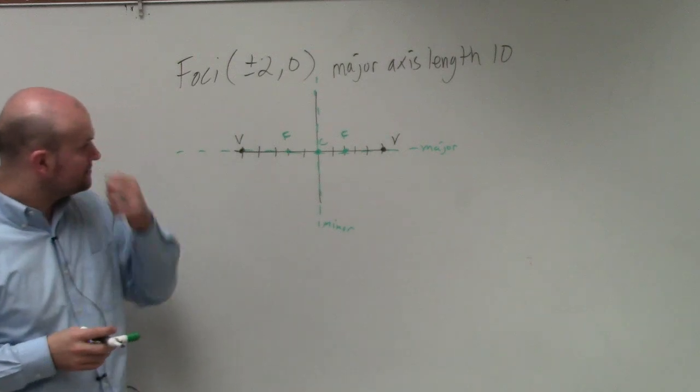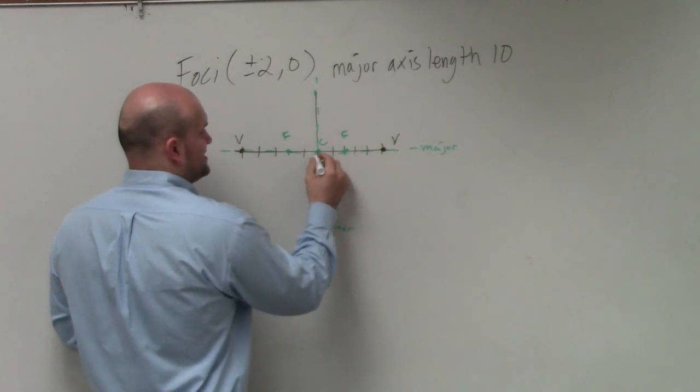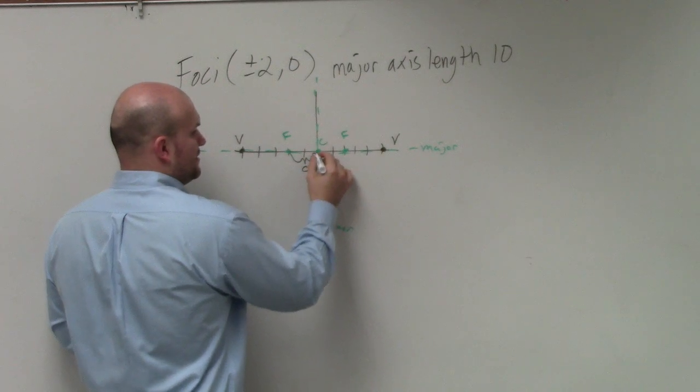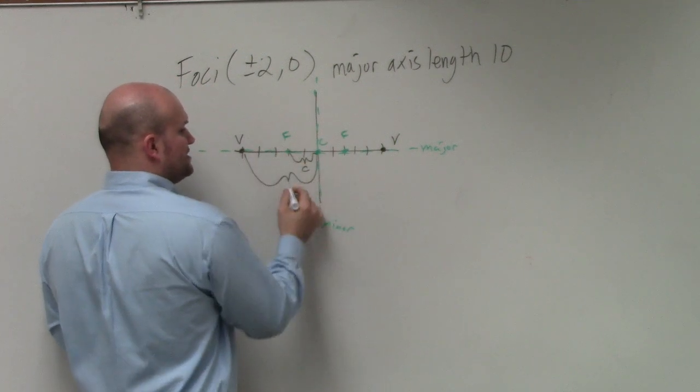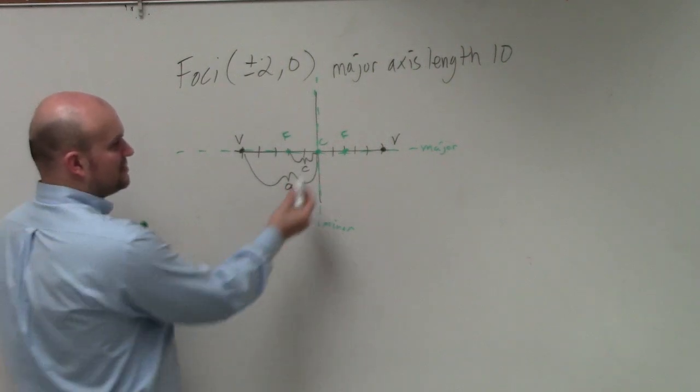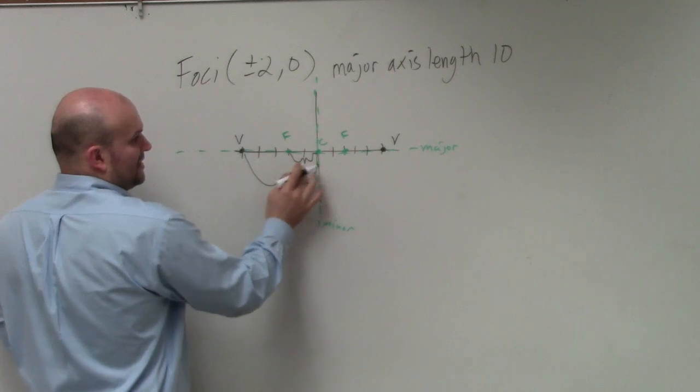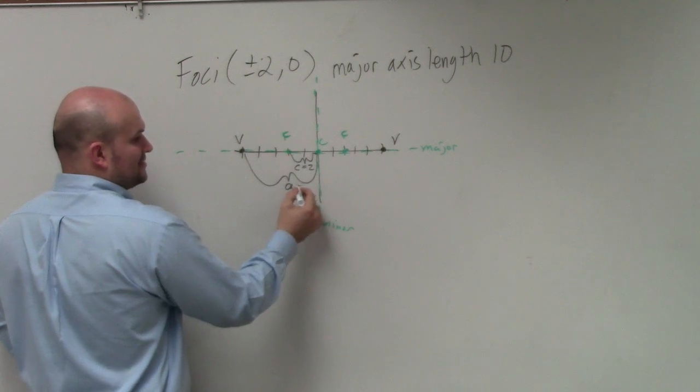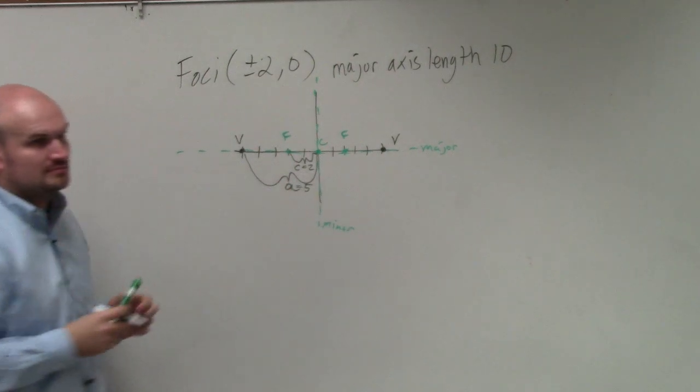Now, so we know that this value, the distance from the center to the foci is c, whereas the distance from the center to the vertices is a. Correct? So we can just look at our formula here and see that c is equal to 2 and a is equal to 5. Does that make sense?